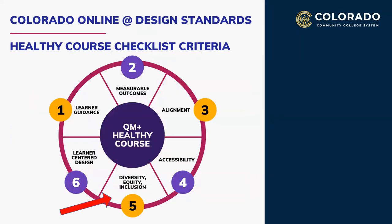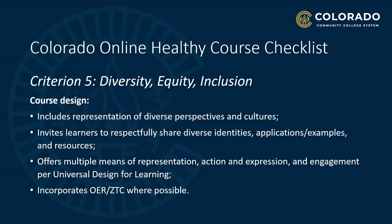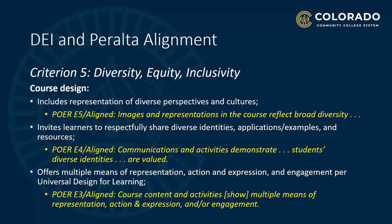After developing the full set of QM Plus standards to include DEI and learner-centered considerations, we realized we needed to convert the standards into a more usable structure. For usability, we created a simplified model: the Colorado Online Base Course Standards. The Healthy Course Checklist groups the QM Plus Standards into six core criteria while elevating the role of DEI strategies as a dedicated criterion for online course design that supports positive learner experiences. Criterion 5 of the Healthy Course Checklist offers strategies pertaining to diversity, equity, and inclusion, including diverse representation in the design, encouraging learners to share their own diverse identities, UDL principles, and incorporating open educational resources and zero textbook cost materials where possible.